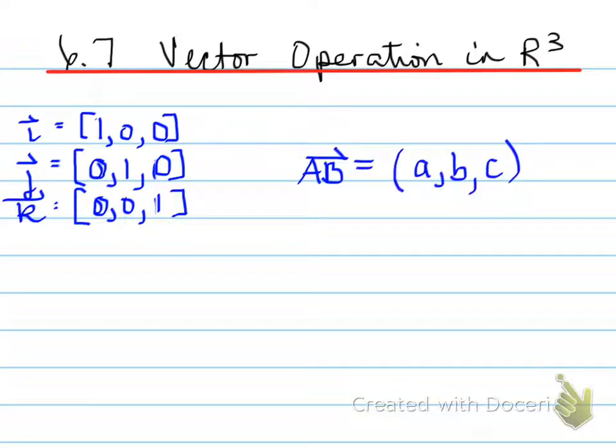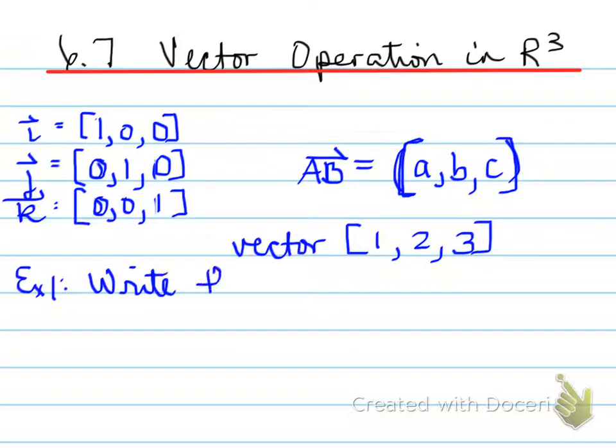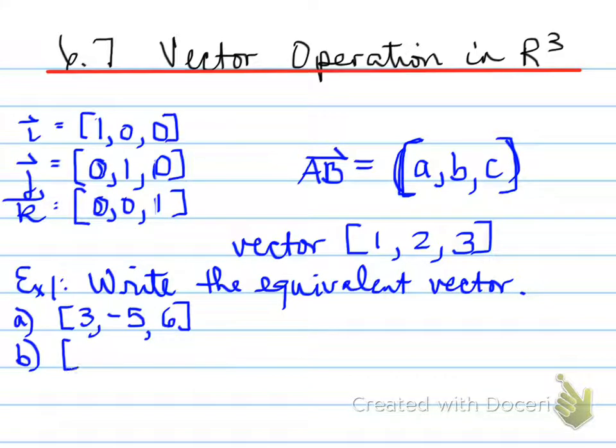Now you have some vector AB with the components of a, b, and c, such as vector [1, 2, 3]. You're to write this as an equivalent vector. These three, for example, are three different vectors.